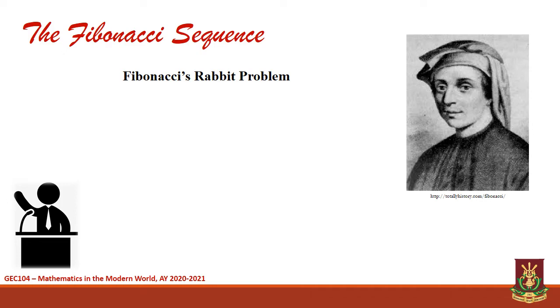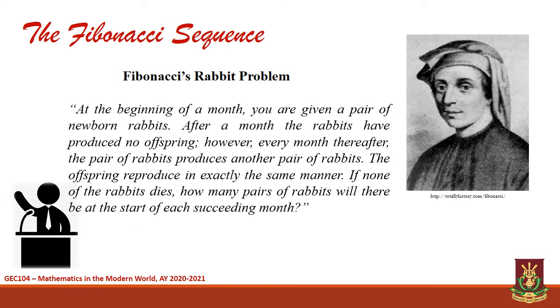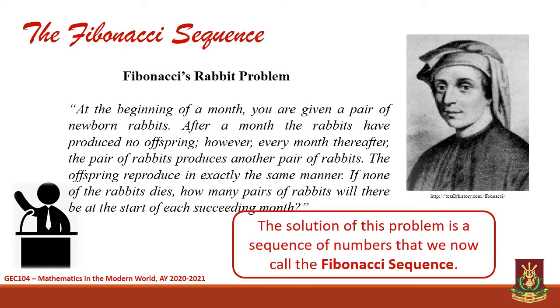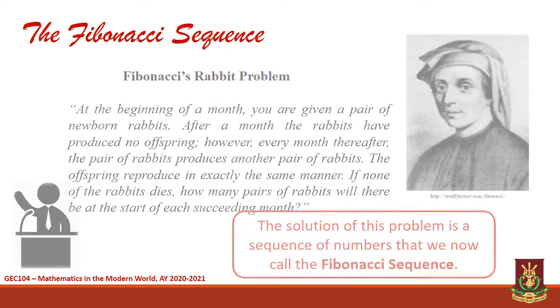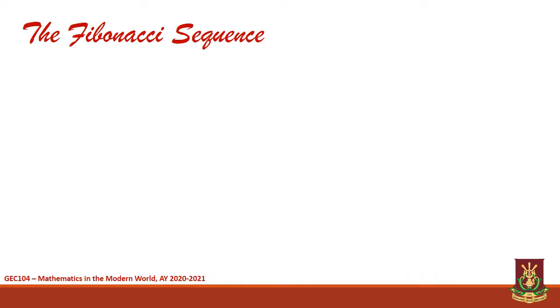Fibonacci's book also contains a problem concerned with the birth rate of rabbits based on idealized assumptions. The solution of this problem which he obtained is a sequence of numbers that we now call the Fibonacci sequence. The Fibonacci's rabbit problem can be illustrated as follows. Number one, at the start of a month, you have a pair of newborn rabbits.